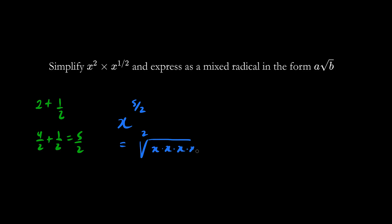There's going to be five x's. Every pair allows one person to escape. So the answer is x times x, which is x squared root x. This is a mixed radical.